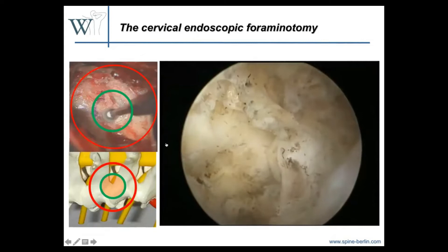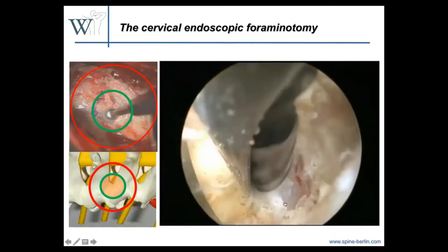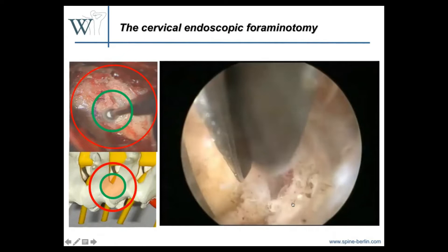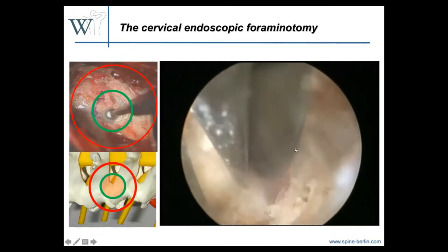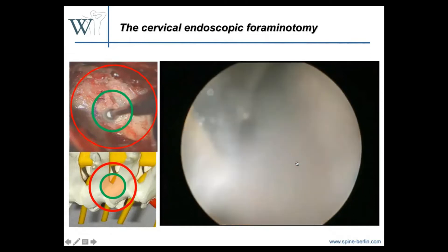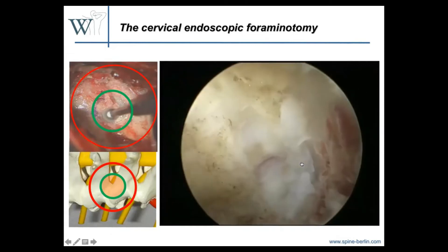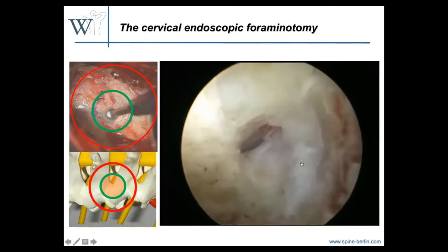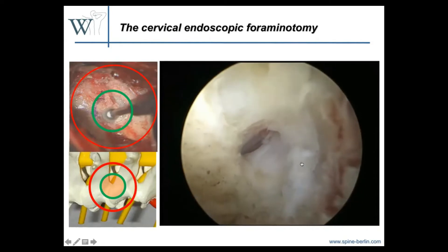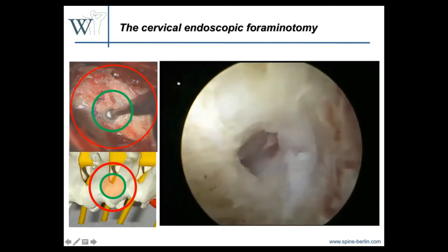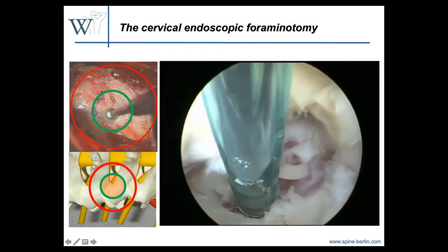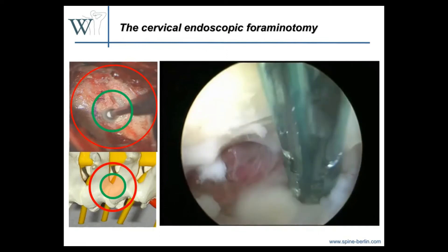We have the flavum ligament and the lamina here, and the facet joint would be here. We start to drill a little bit off the lamina with the oval burr, then we can use scissors to open the flavum — just like in lumbar endoscopic disc surgery. We minimize the approach to this area of interest, so we don't need to expose the other structures as we typically do in microscopic surgery.